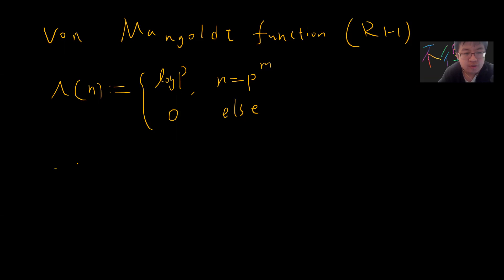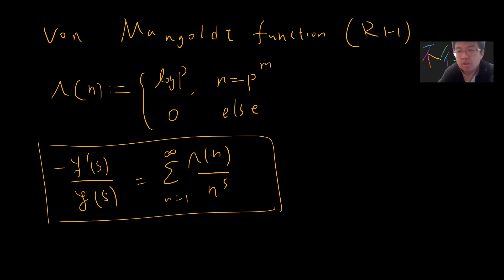A famous result is that if you take the derivative of the zeta function, this connects to a really deep theorem. Using the Hadamard product formula, once you know the roots of the Riemann zeta function, it gives you the prime distribution — so this is very closely related to the Riemann hypothesis and prime number theory.